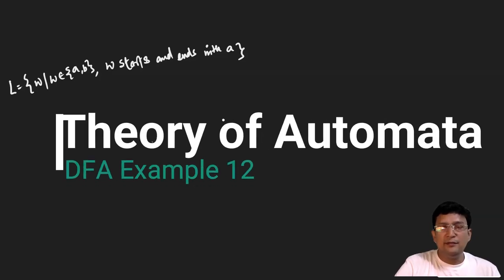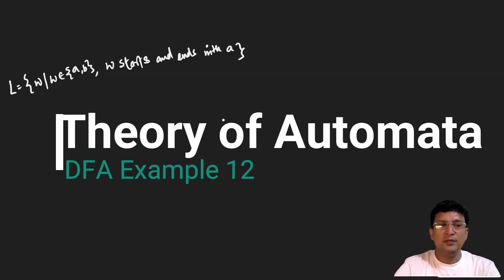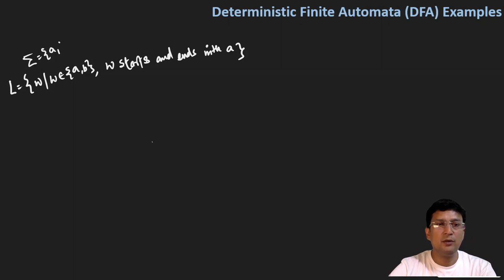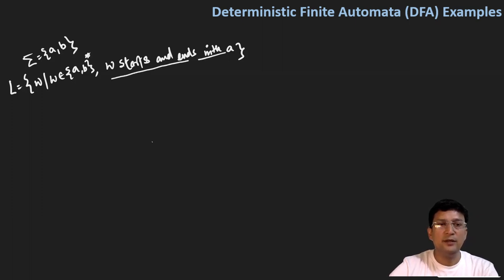Hello everyone. Let's take another language and design the DFA for the same. The language has the alphabet set {A, B}, meaning the strings of this language will contain only A and B. The strings in this language start and end with 'a'.